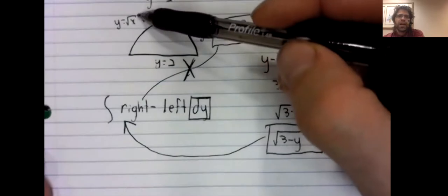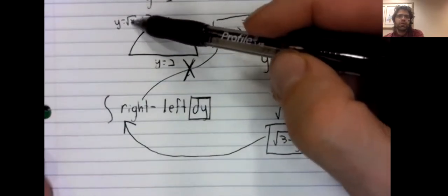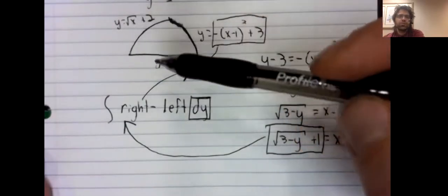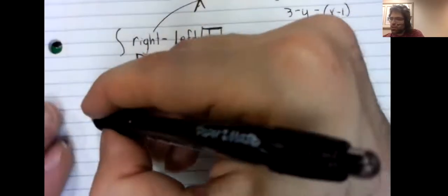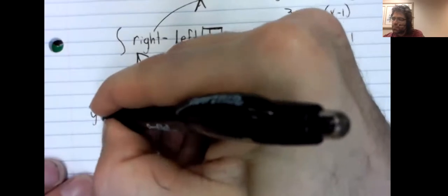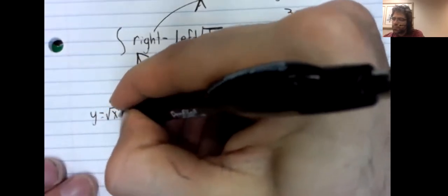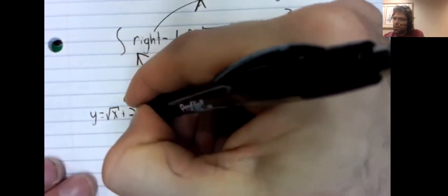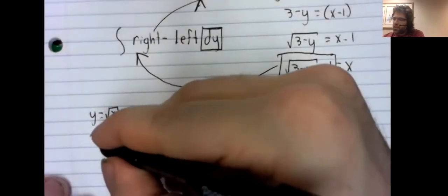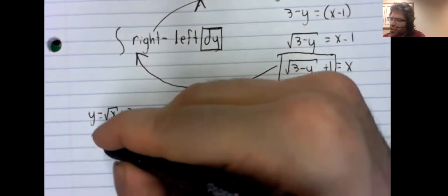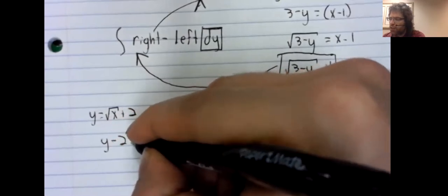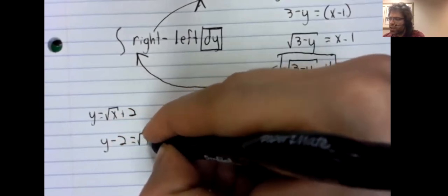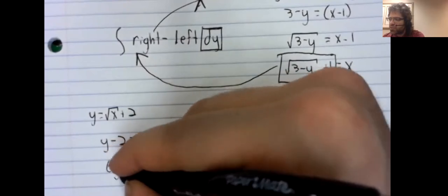And now that your right hand function is written in terms of y, it can go in there. Likewise, and as I say, that would have been an error. Likewise, you can't just take the square root of x plus two and stick it in here. We need to have a function of y, not a function of x.